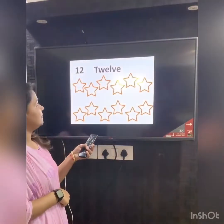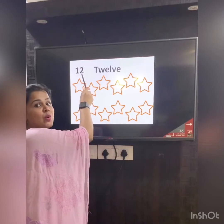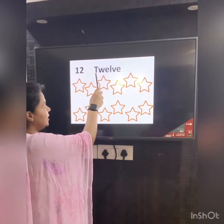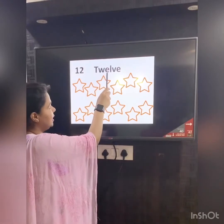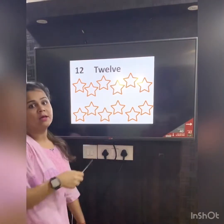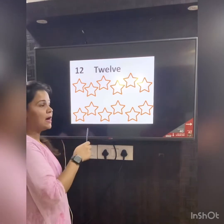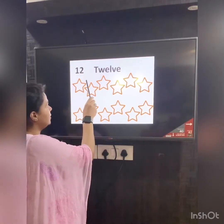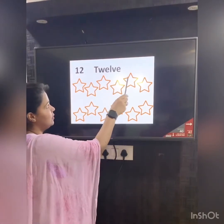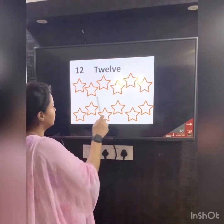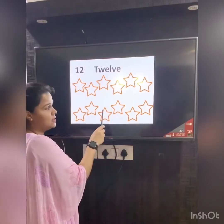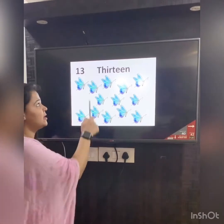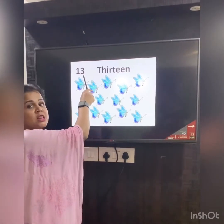After 11, what comes next? Number 12. The number name for 12 is T-W-E-L-V-E. 12. Should we count how many stars are here? Count with me: 1, 2, 3, 4, 5, 6, 7, 8, 9, 10, 11, 12. Number after 12 is number 13.